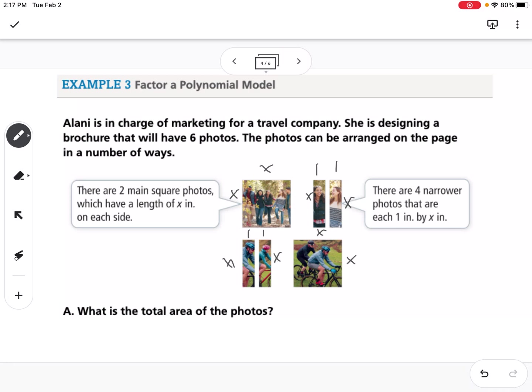So what's the total area? We have 2 that are x by x. So that would be 2 times x squared. Plus we have 4 of them that are 1 times x. So that would be 2x squared plus 4x.